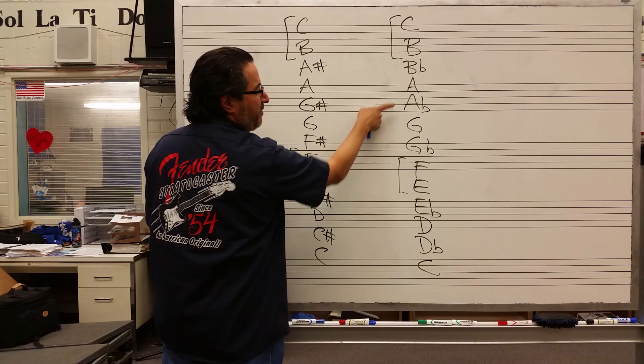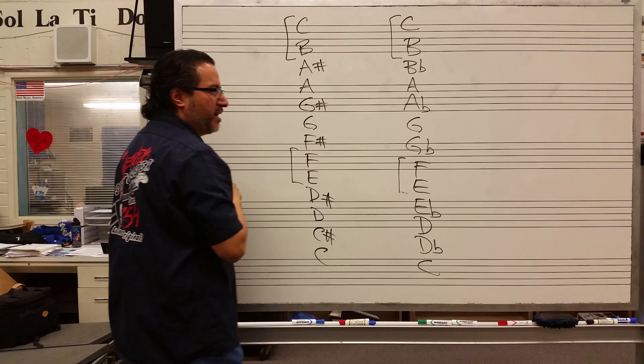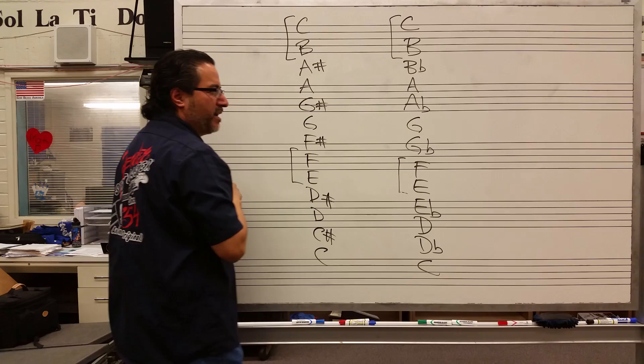From G to A — whole step, one two. From A-flat down to G-flat — one, two — whole step. From A-flat down to G — half step. From C to B-flat — whole step. From A-sharp to C — it's a whole step.